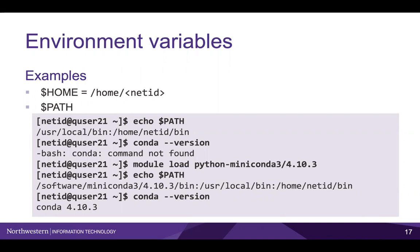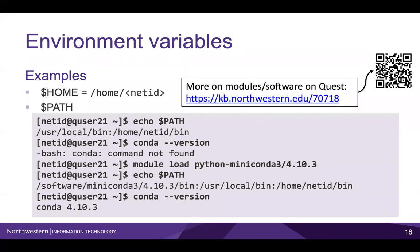In our example on the slide, we first examine which directories are in our path by running echo $PATH. Let's say you wanted to use the conda software. If you enter conda on your bash prompt, but the software conda is not found in any of the directories in your path, Quest will return a command not found error. However, once you load the miniconda module, the directory with the conda executable will be added to your path, and Quest will use that when you enter conda at your prompt. Please refer to our KB page to learn more about modules and software.